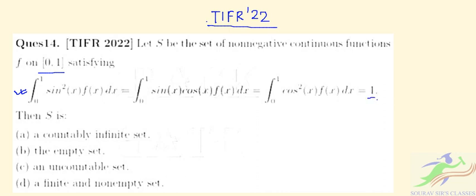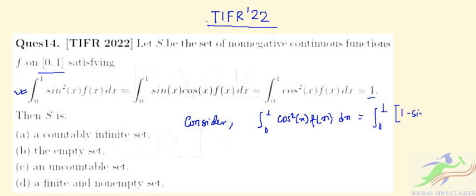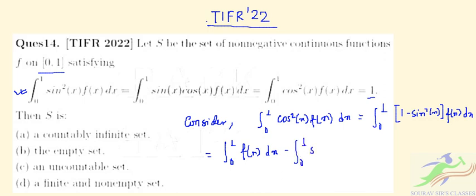Consider that ∫₀¹ cos²(x) f(x) dx = ∫₀¹ (1 - sin²(x)) f(x) dx. This simplifies to ∫₀¹ f(x) dx minus ∫₀¹ sin²(x) f(x) dx equals 1.